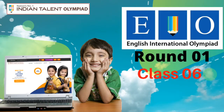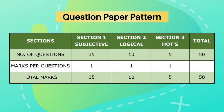Hello everyone, welcome to Indian Talent Olympiad. Today we will go through the round 1 question papers of ITO's English International Olympiad for class 6. The question paper consists of 50 questions in which 35 questions are of subjective, 10 questions are of logical reasoning and 5 questions are of high order thinking. This 50 question exam holds 50 marks. So let us begin.